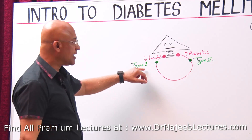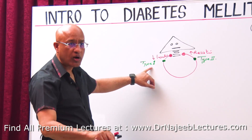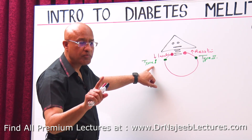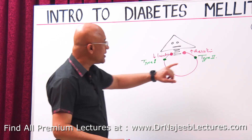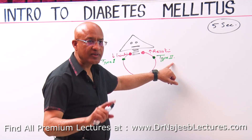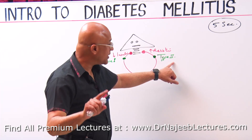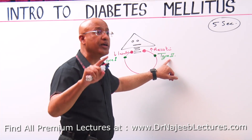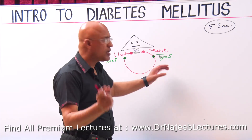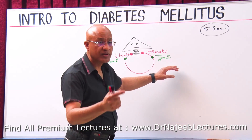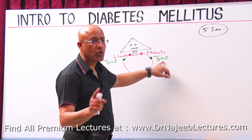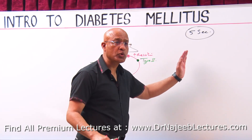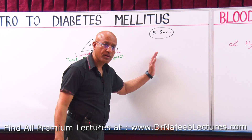In Type 1 diabetes there is absolute or very severe reduction in production of insulin due to autoimmune destruction of beta cells. In Type 2 diabetes, insulin is being produced — at least in the early phase — because this disease develops over many years. The real problem in the beginning is that tissues are not responding to insulin.